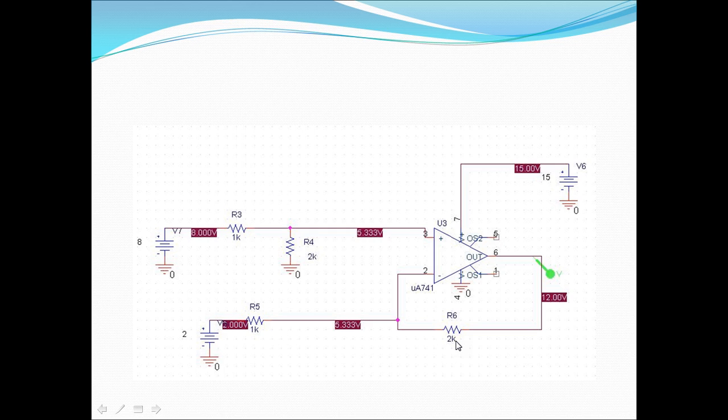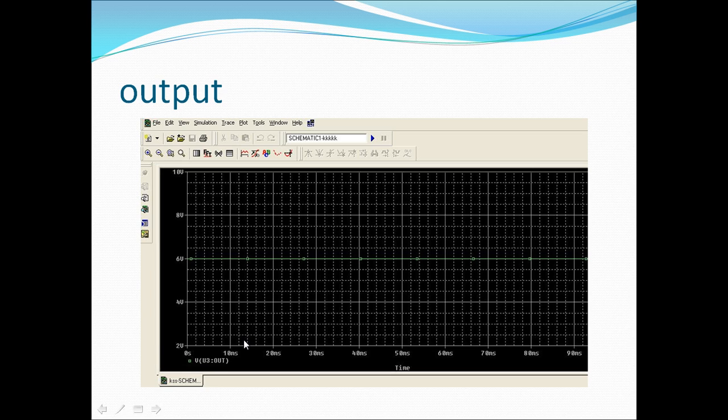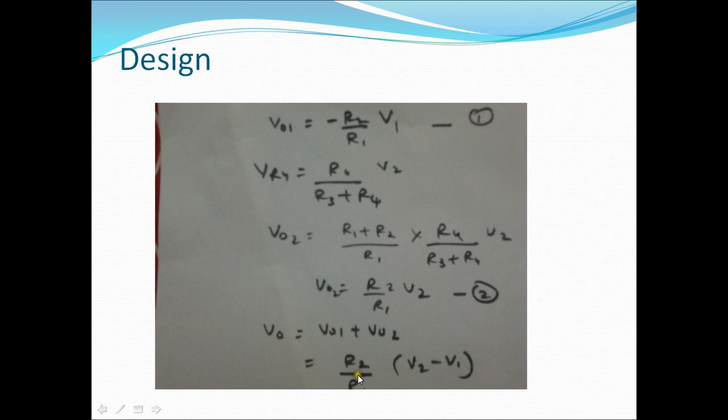Since R4 is equal to R2, so we need to change R4 also to 2k. That time gain will be 2k upon 1k. You can see here R2 by R1.